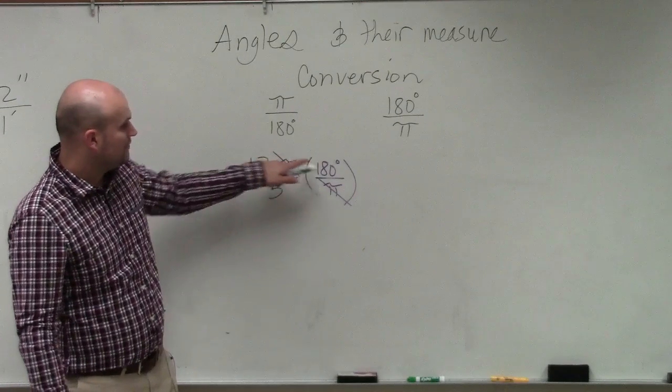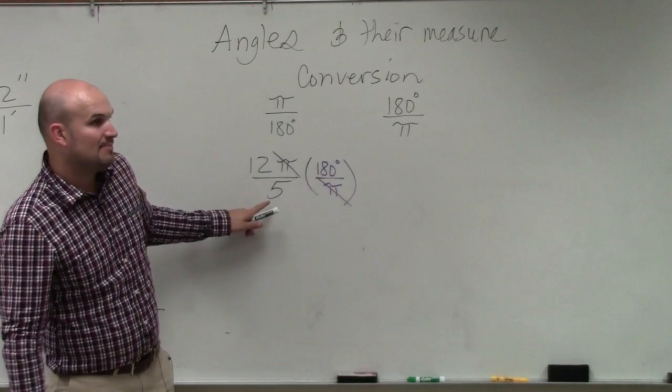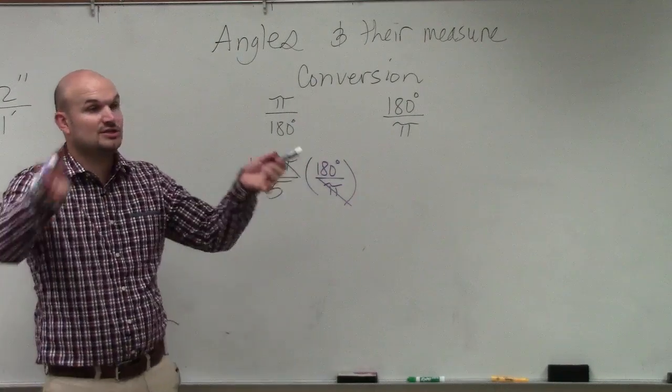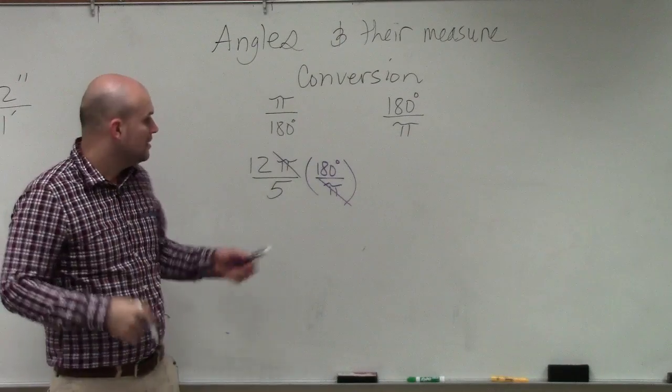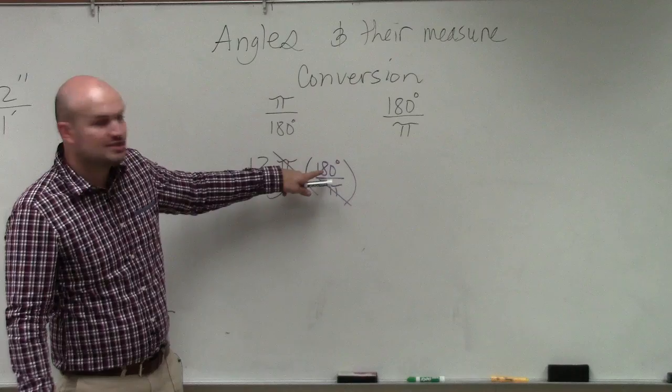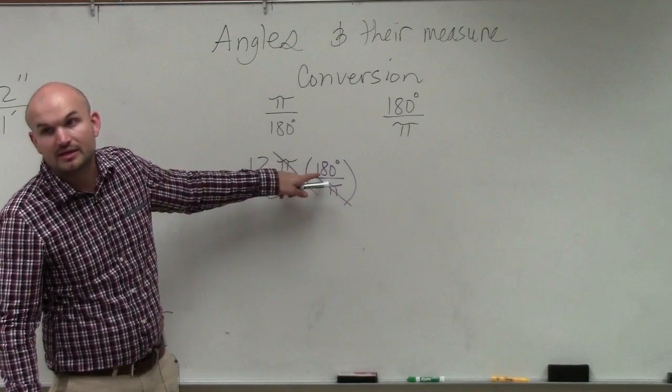Then I have 12 times 180 divided by 5. So you could easily just multiply straight across and do that. Or you could say 5 goes into 180, which should be, yes?